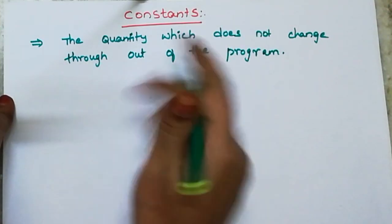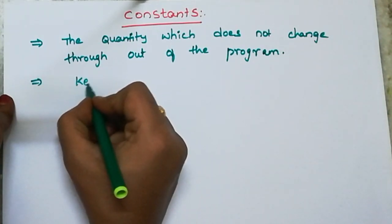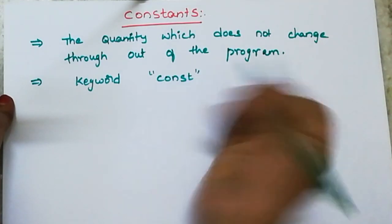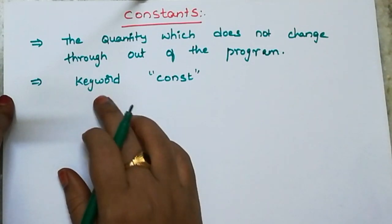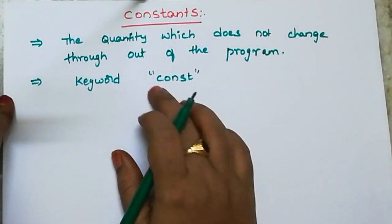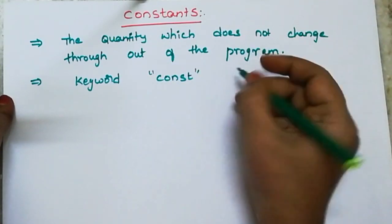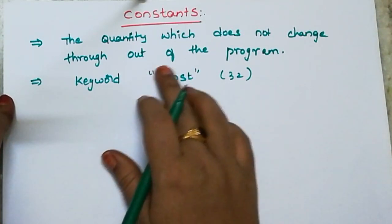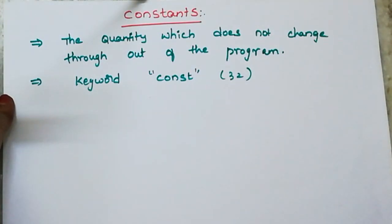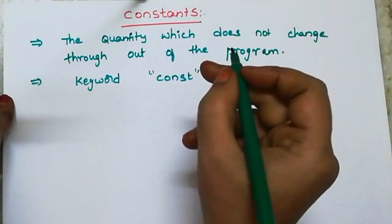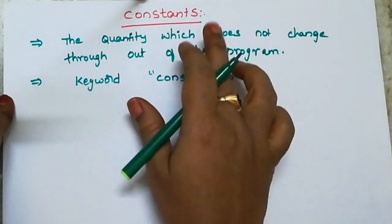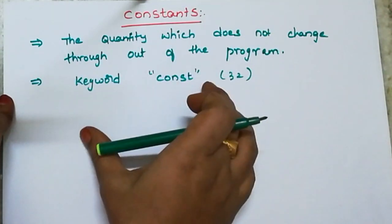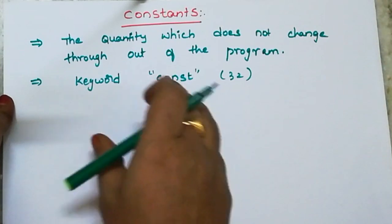We declare a constant by using the keyword 'const'. The word 'const' is a keyword — a fixed word recognized by the compiler. In C language there are 32 keywords, and one of those 32 keywords is called 'const'. So 'const' is the keyword used to represent a constant.